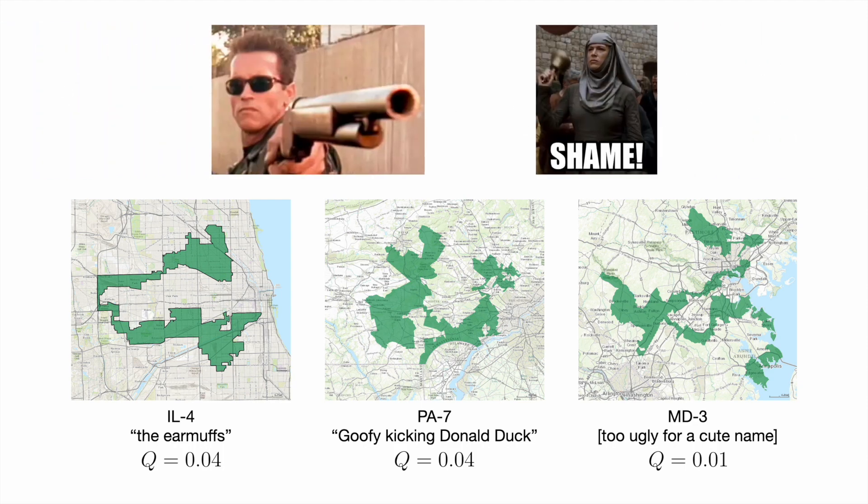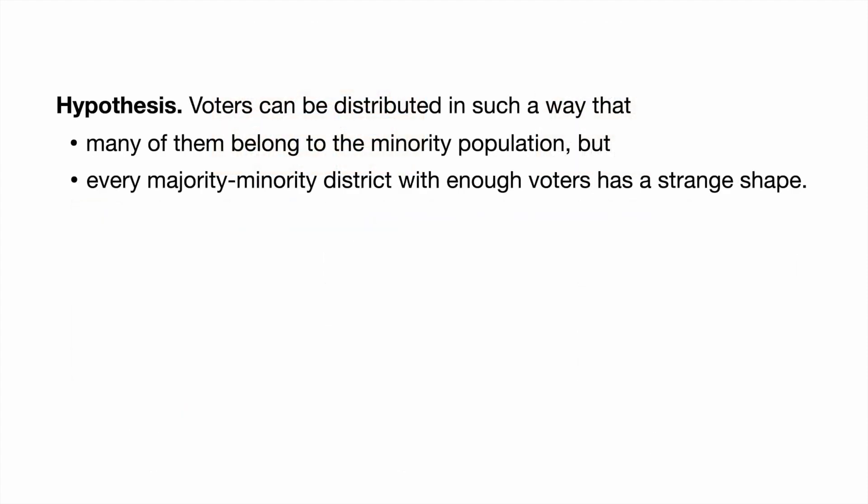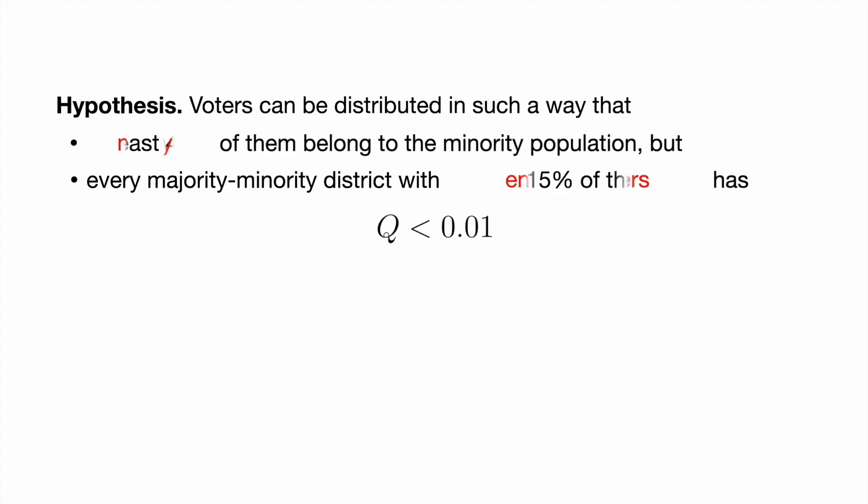Do you remember our hypothesis? Let's make it explicit. A shape is strange when the Polsby-Popper score is small, and we use percentages to prescribe sizes of the minority population and the district. Now that we've converted our hypothesis into a mathematical statement, we can actually prove it, so let's do that.